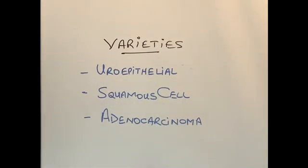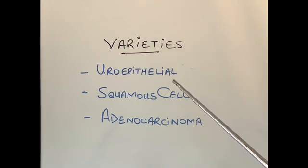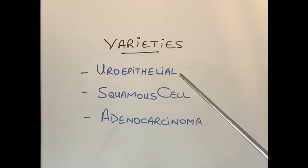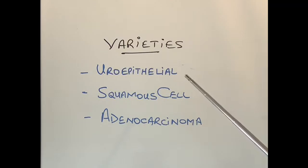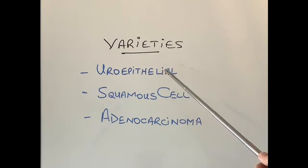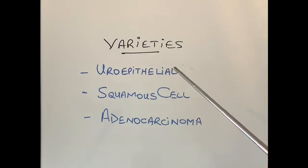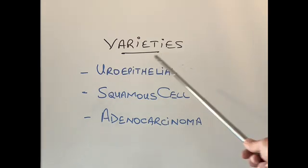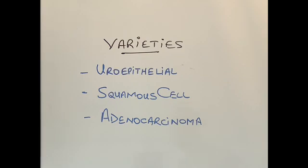There are three main varieties of bladder cancer. The first is uroepithelial cancer, or urothelial cancer, which in the past was called transitional cell carcinoma. This arises from the lining of the bladder and is the commonest variety. As the bladder shares this lining with the tubes coming from the kidneys into the bladder called the ureters, and also part of the kidney, this type of cancer can arise not just in the bladder but also in the ureters and in the kidneys.